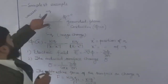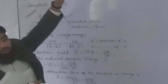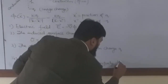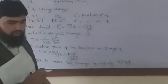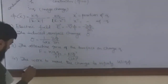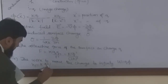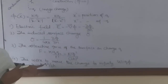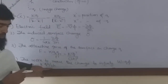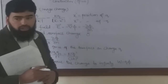The charge is feeling an attractive force, so work must be done to move it to infinity. The work is W equals Q times phi, which equals KQ² over 2H, because the potential due to the image charge at the location of the source charge is KQ over 2H, and multiplying by the source charge Q gives KQ² over 2H.